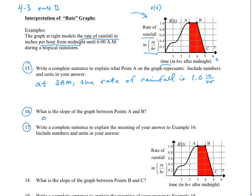Well, 17 asks us to write a sentence for that, and so from three o'clock to four o'clock there is no change in the rate of rainfall.